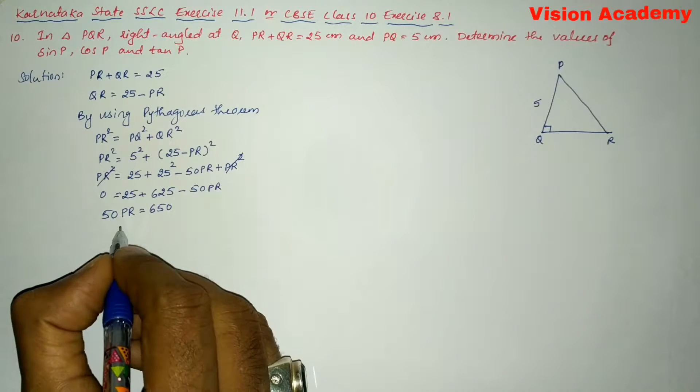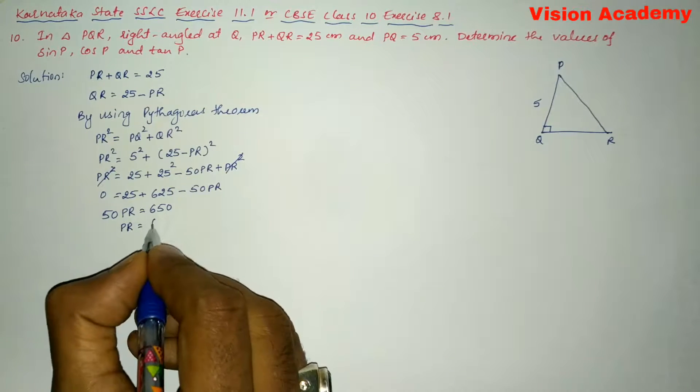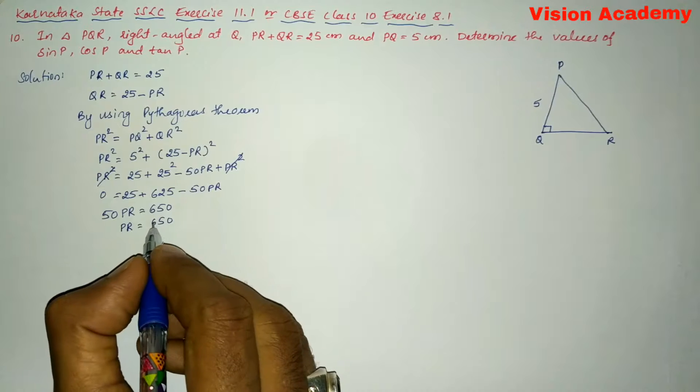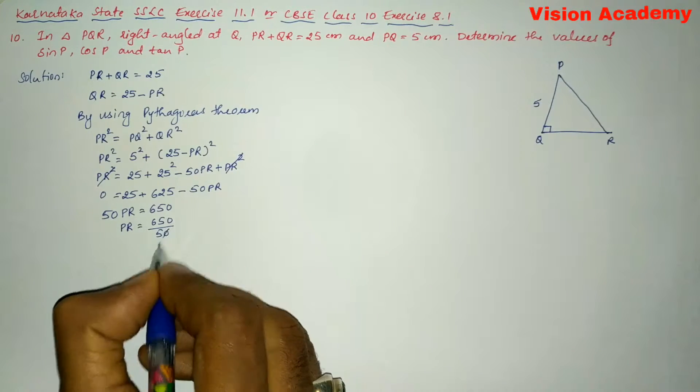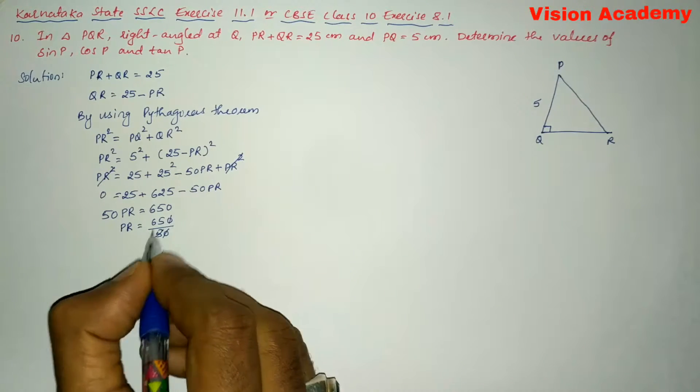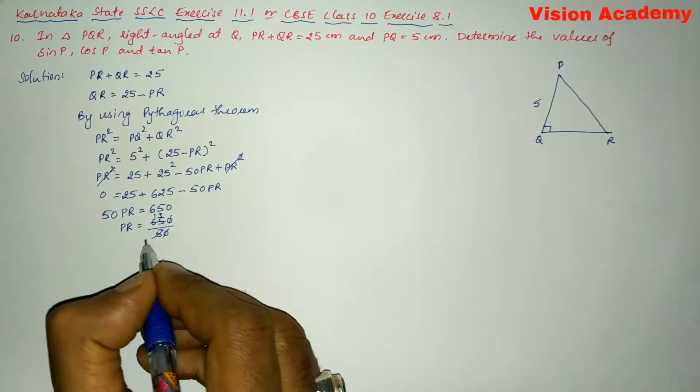Now transform this 50 from LHS to RHS. Here PR is equal to 650 divided by 50. So here PR is equal to 13 centimeter.